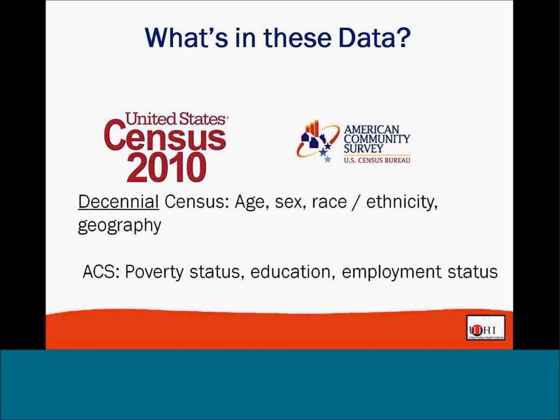The census used to have a long form, but it no longer does. What has replaced the long form is the ACS — the American Community Survey. The ACS gets at housing and economic characteristics that can better characterize a population. It is not a full census of the population, but it is conducted more frequently and serves as a representative sample.